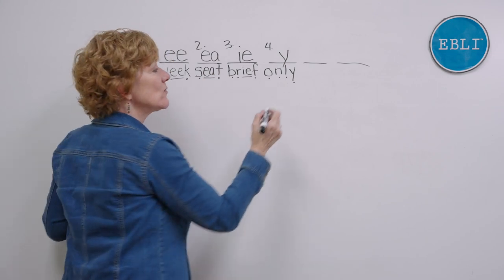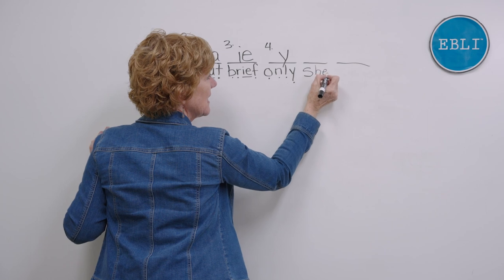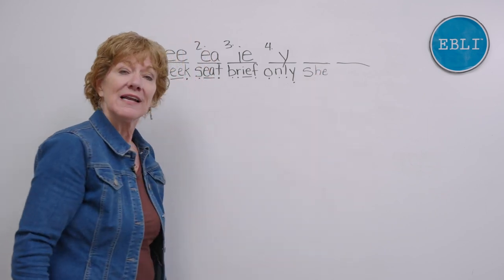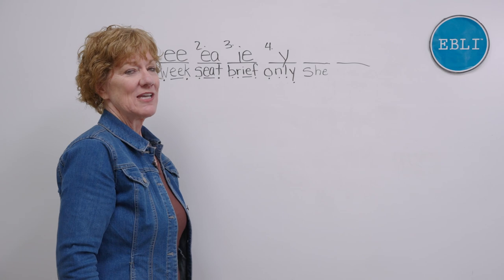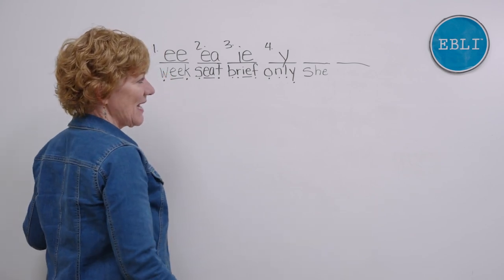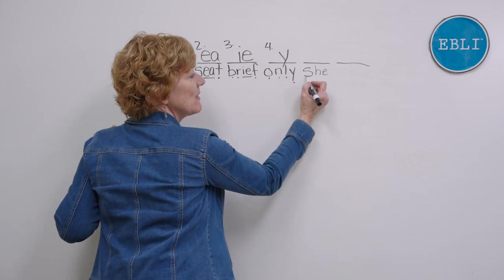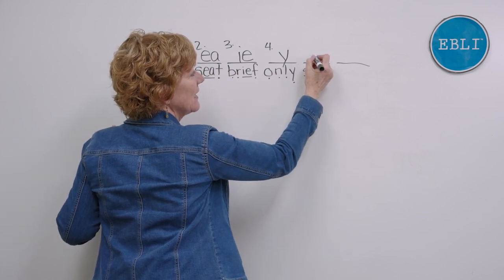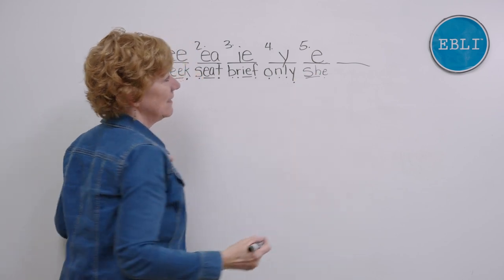Under the next one, say as you write the word 'she.' SH-E. She. Now say the sounds as you dot and dash 'she' and put your E spelling at the top. Say with me: SH-E. She. Here's our fifth way to spell E. Isn't that interesting?